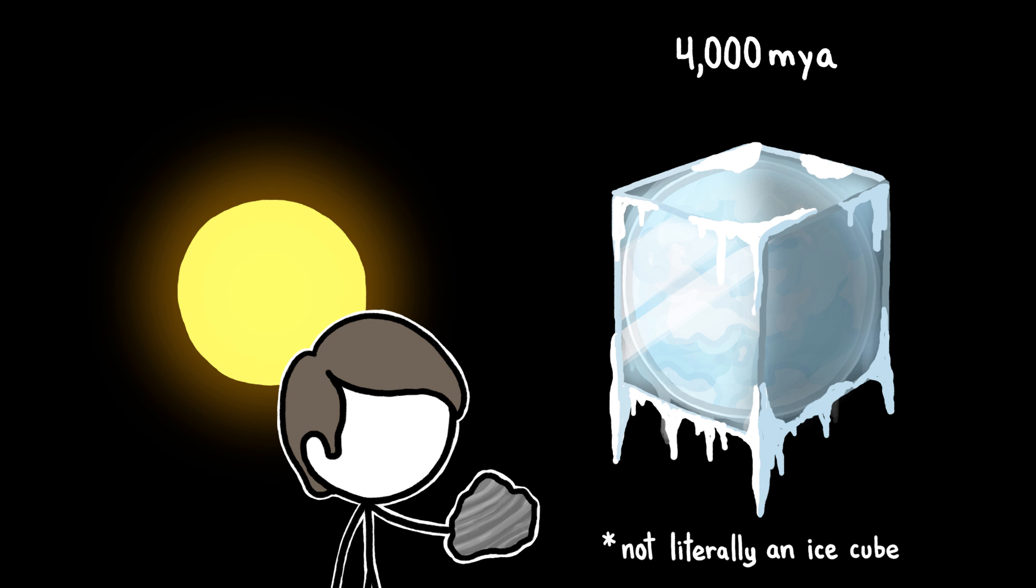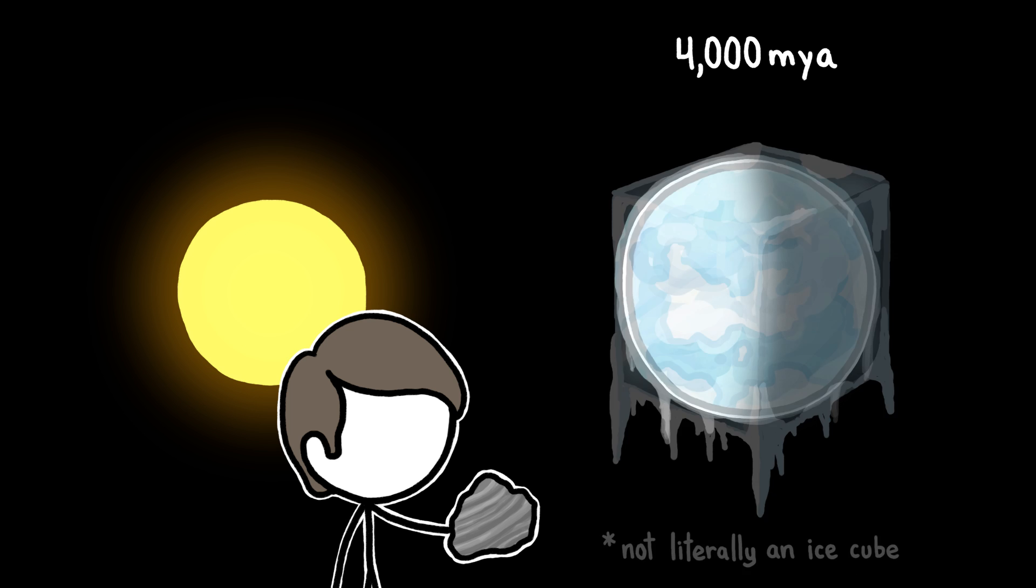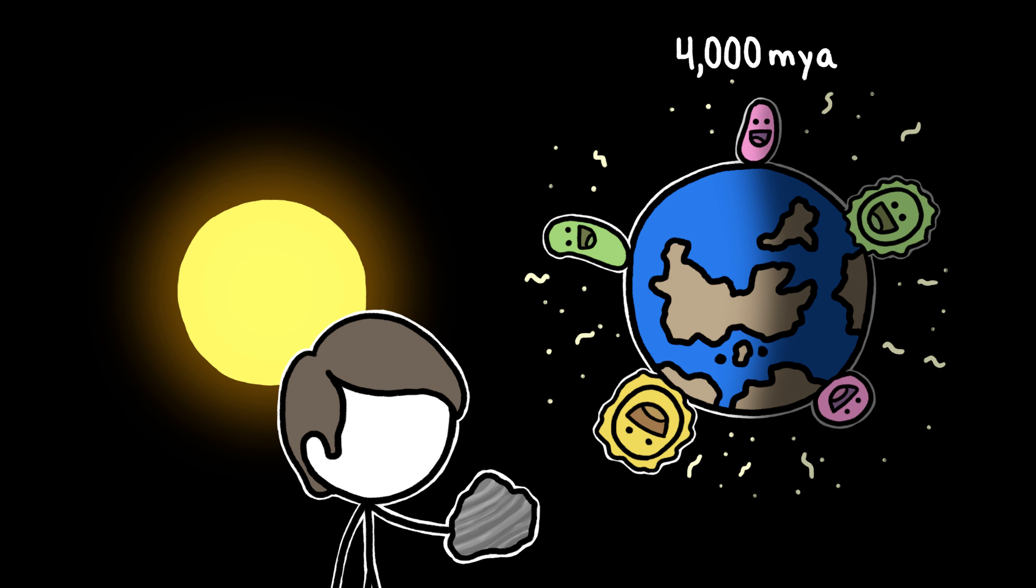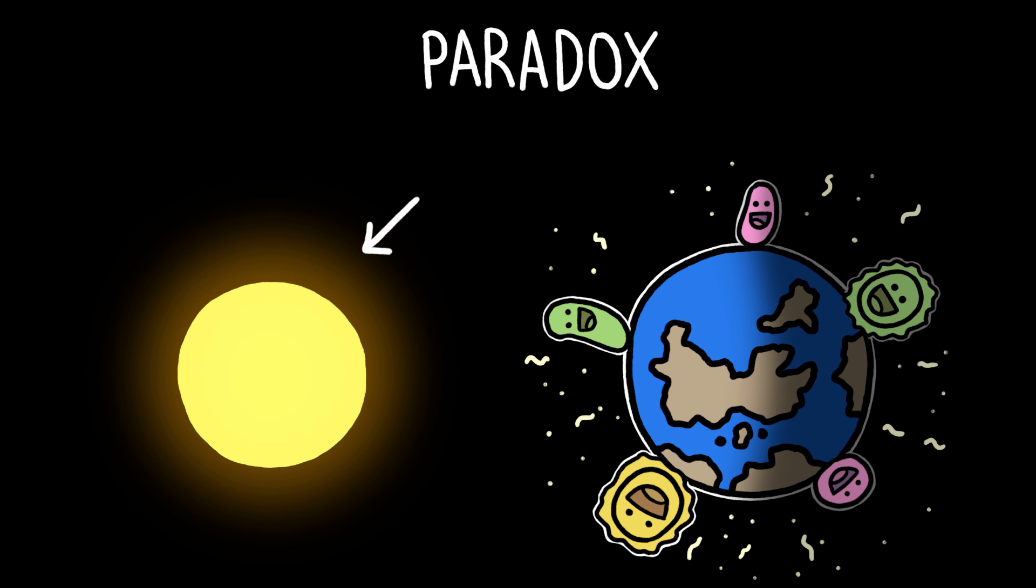But according to rock and fossil evidence, ancient Earth was actually a melty, warm, watery haven for life where simple single-celled organisms developed and thrived. Hence the paradox: how could the sun be dim but the Earth warm?